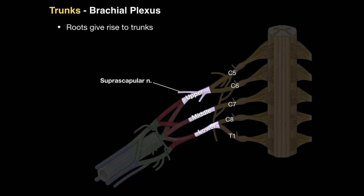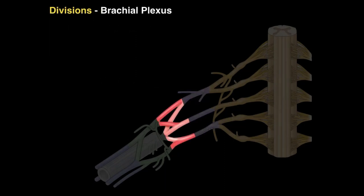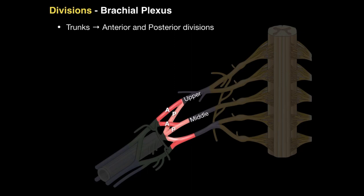The trunks then give rise to divisions, where each trunk bifurcates into anterior and posterior divisions. So the upper trunk has an anterior and posterior division, the middle trunk has an anterior and posterior division, and the lower trunk has an anterior and posterior division as well.